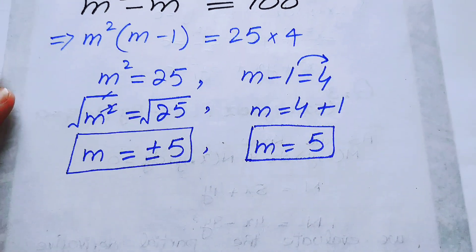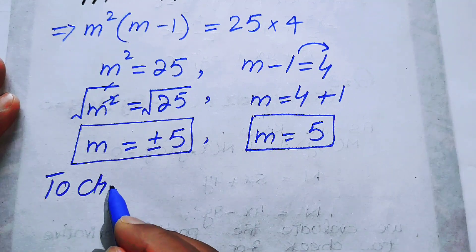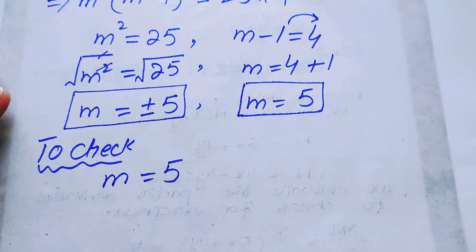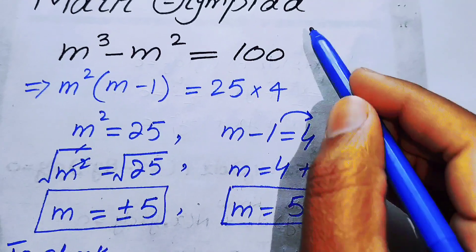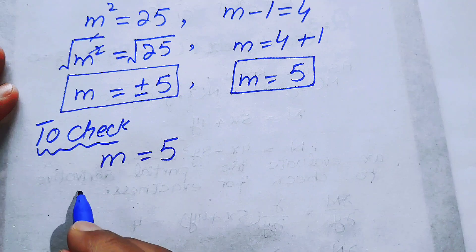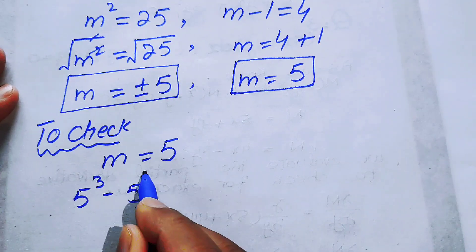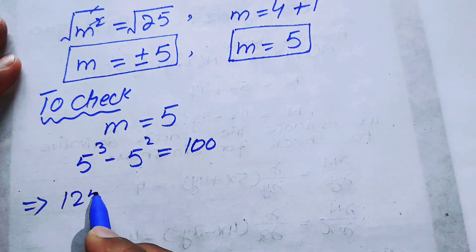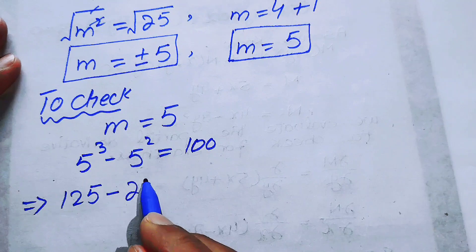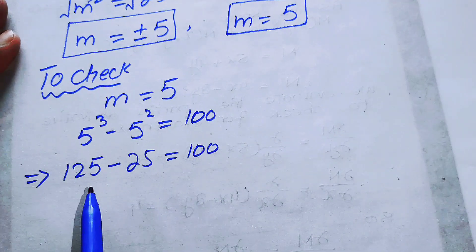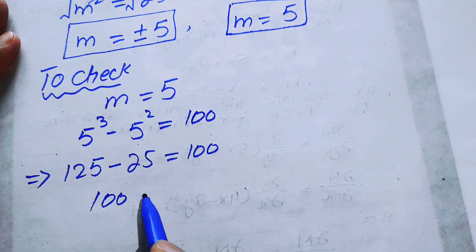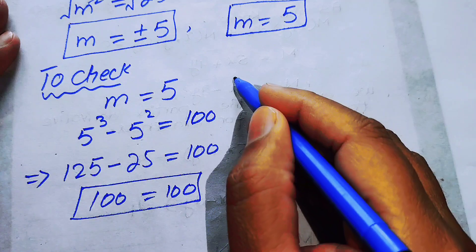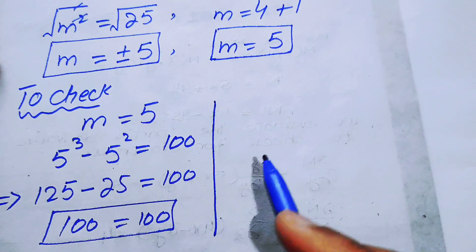Now we check which values satisfy the given equation. First we take m equals positive 5 and substitute into the equation: 5 cubed minus 5 squared equals 100. We get 125 minus 25 equals 100, which is indeed 100. So m equals 5 satisfies the given equation and is one solution.